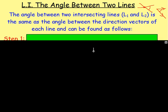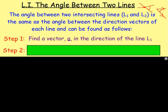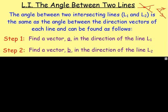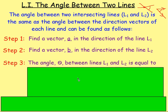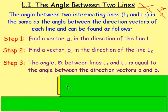How do we find the size of that angle? Well, the first thing we need is the direction vector of the first line. So we need to find a vector A, which is in the direction of line L1. Step two: we need to find a vector B, which is in the direction of line L2 — the direction vectors of each line.